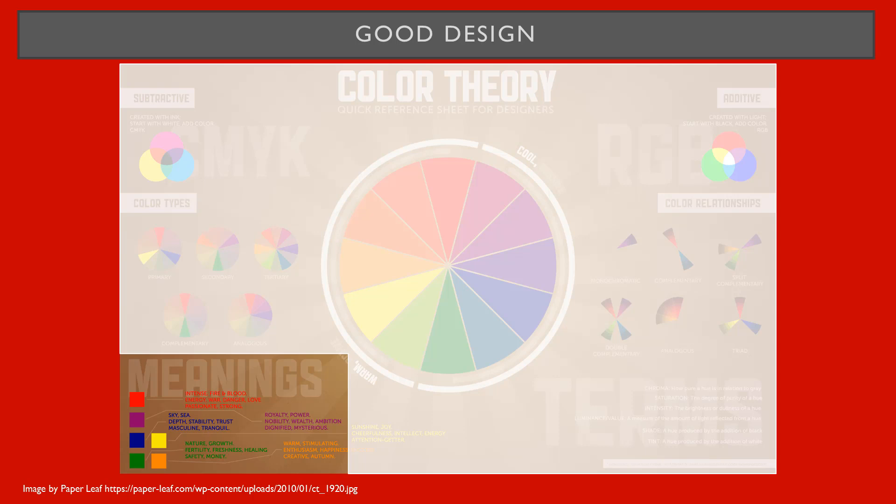For a color scheme, consider the meaning or emotions a color evokes. For instance, yellow conveys energy and happiness, whereas blue conveys water and tranquility.